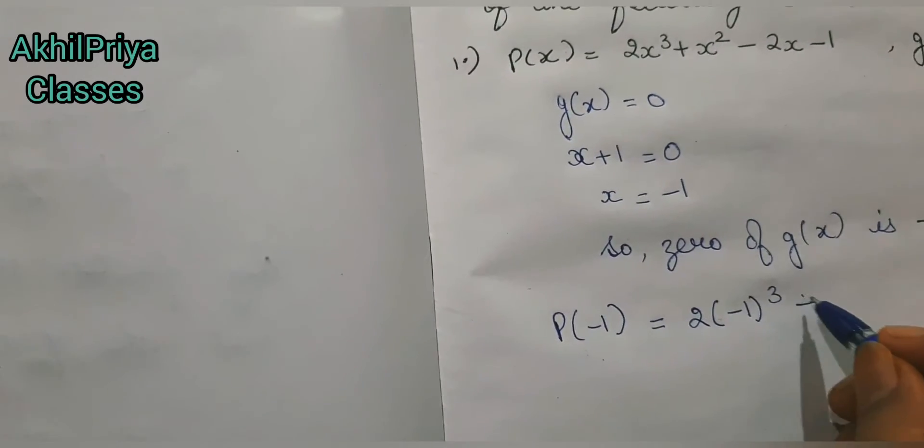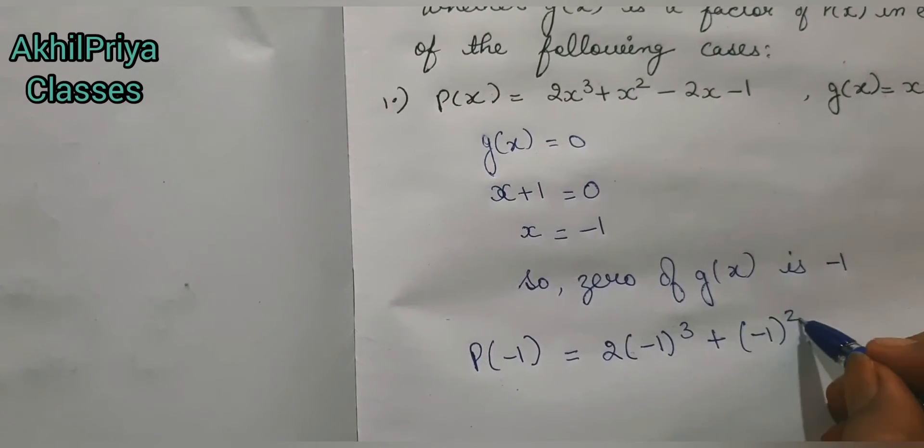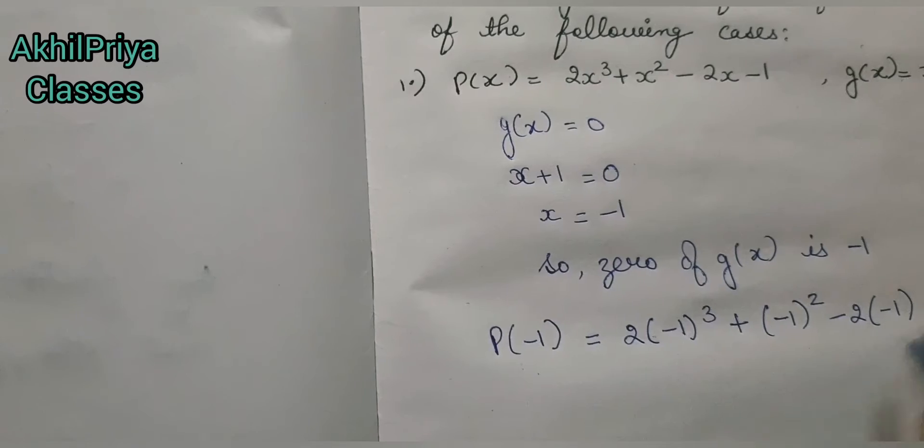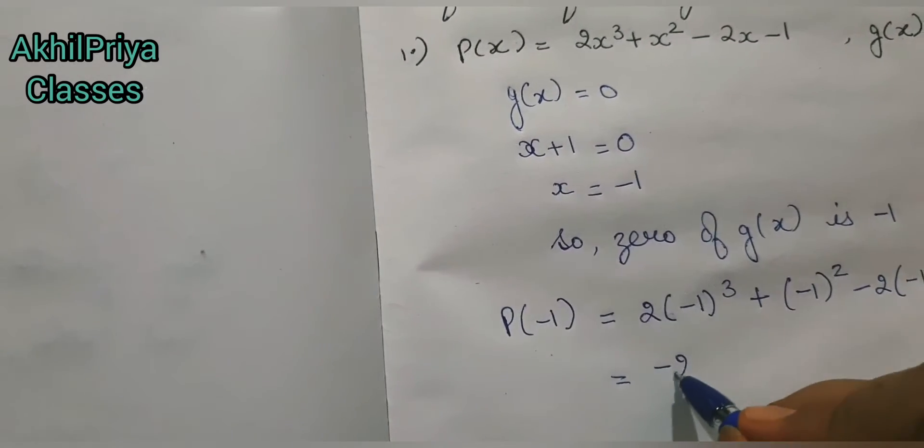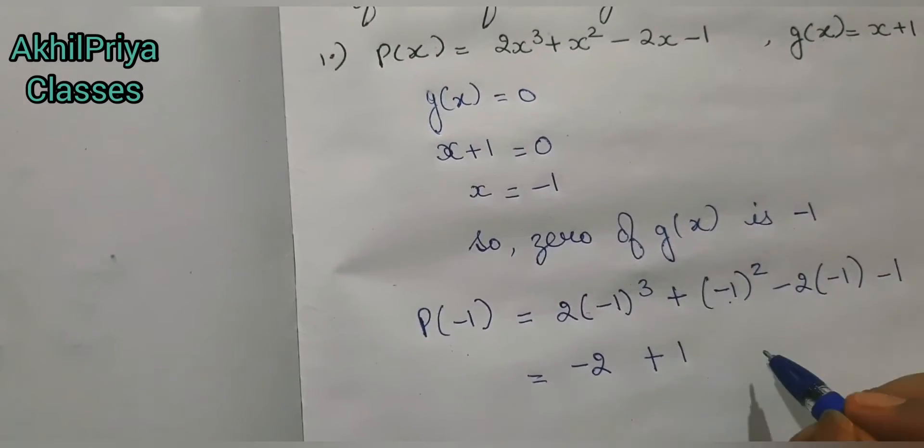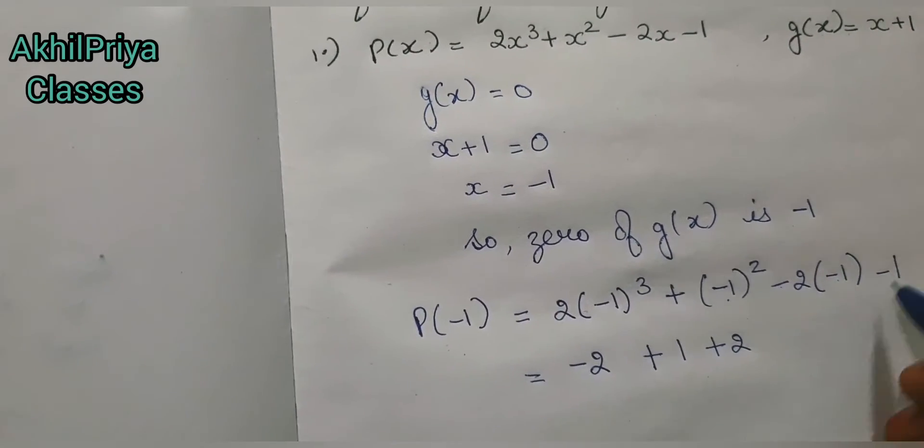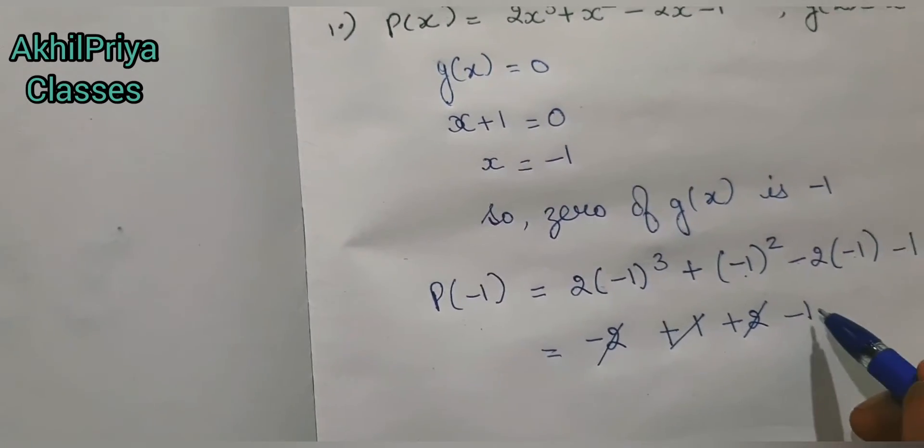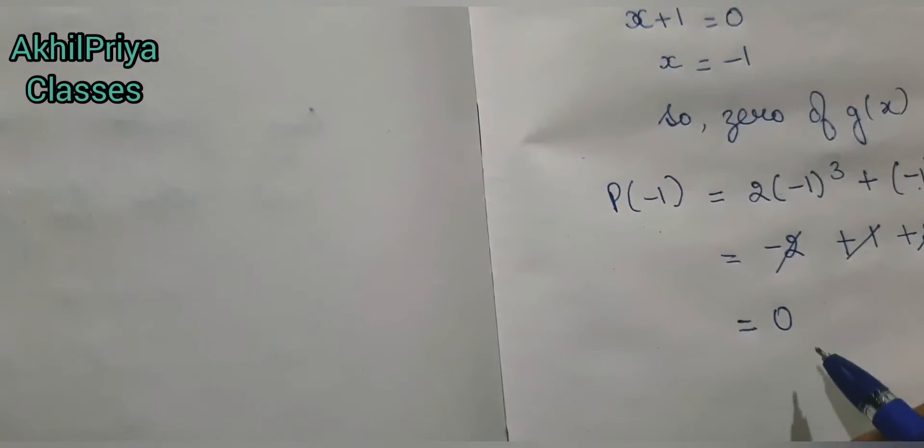So p(-1) = 2(-1)³ + (-1)² - 2(-1) - 1. Now solving this, we know (-1)³ = -1, so this becomes -2 + 1 + 2 - 1. This -2 and +2 cancel, and this +1 and -1 cancel, so the value we get is zero.